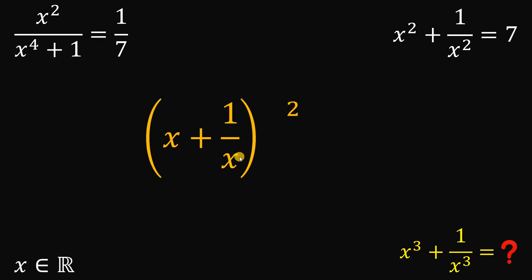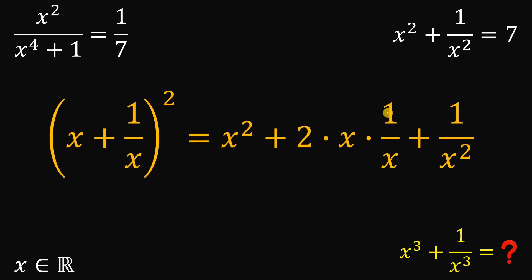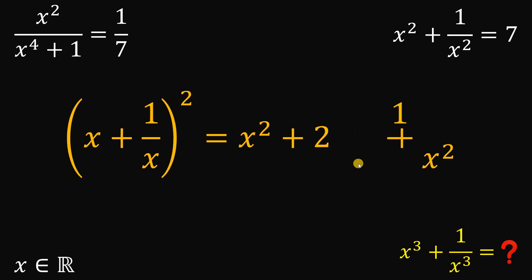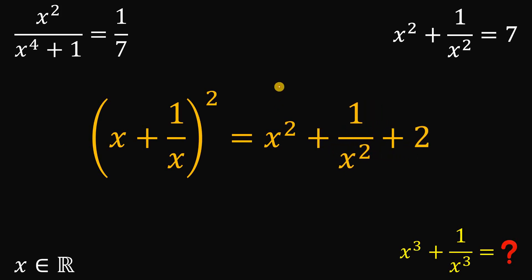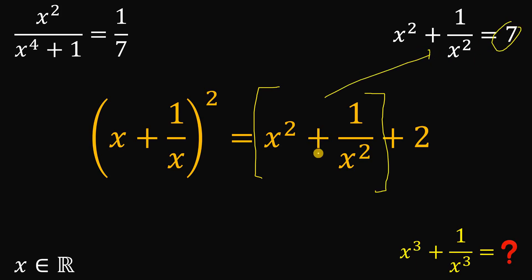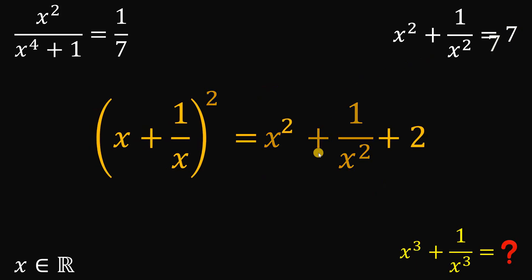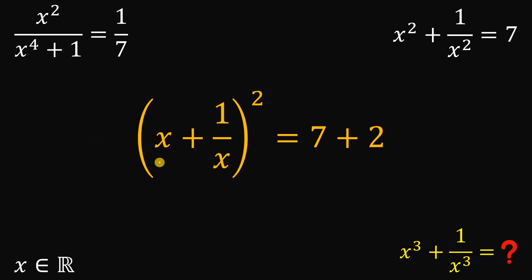Expanding the square, we get x squared plus two times x times one over x plus one over x squared. Simplifying, x multiplied by one over x is just one, so the middle term becomes two. Rearranging, we notice we have x squared plus one over x squared, which we know equals seven.